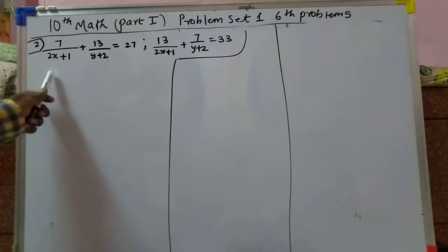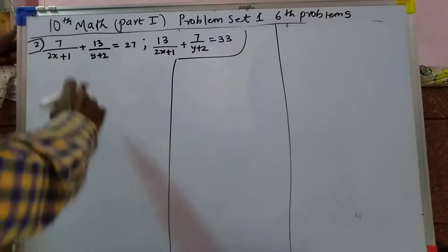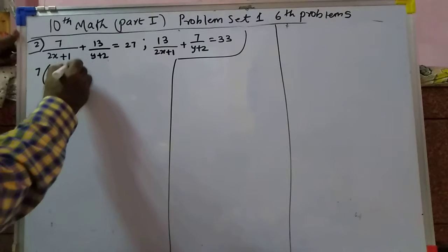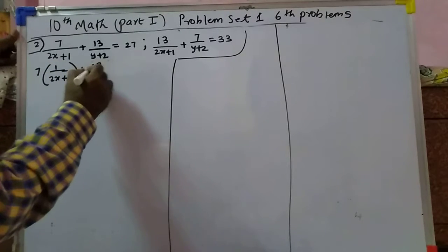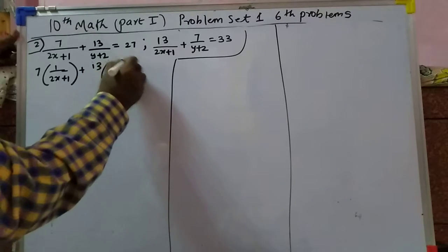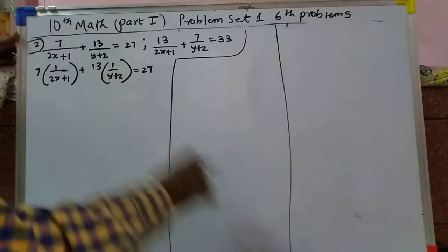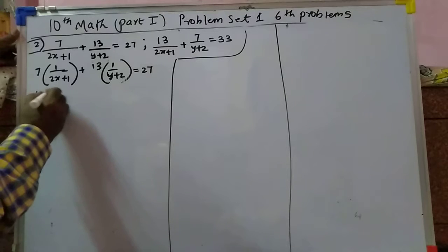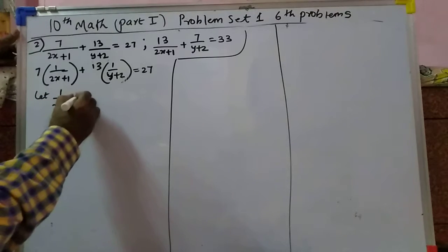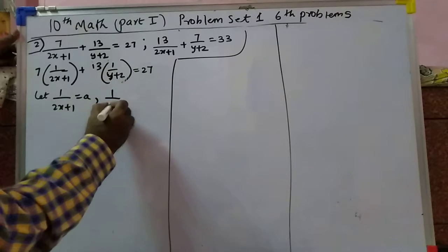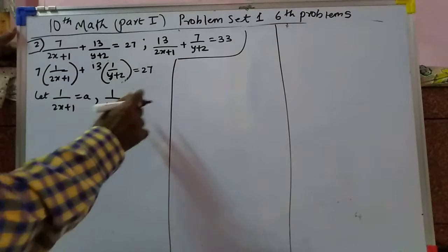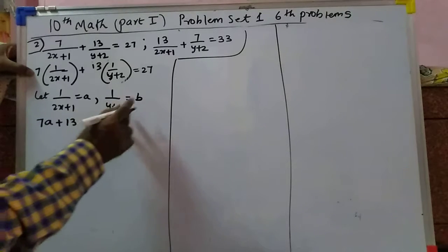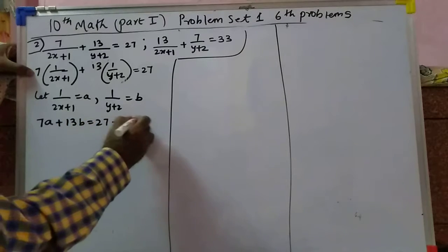Now the second problem. We have 7 into 1 upon 2y plus 1 plus 13 into 1 upon y plus 2 equals 27. Let 1 upon 2y plus 1 equal to a and 1 upon y plus 2 equal to b. Substituting: 7a plus 13b equals 27, equation 1.